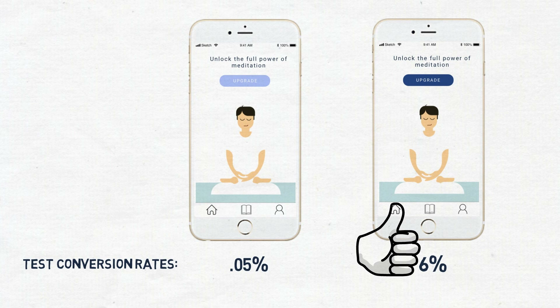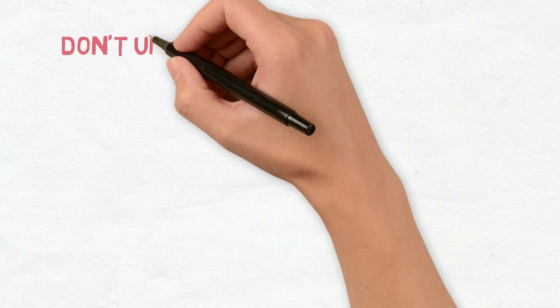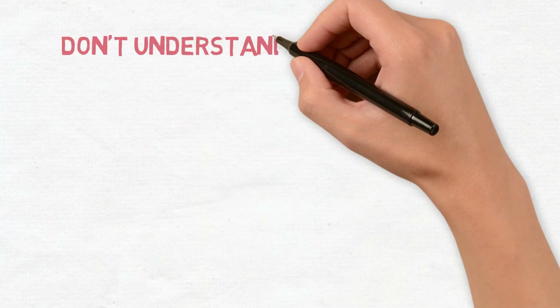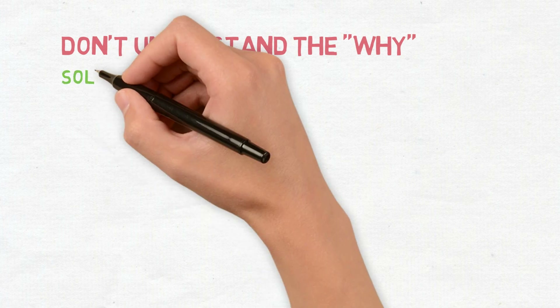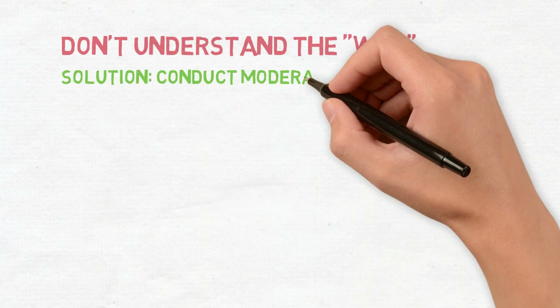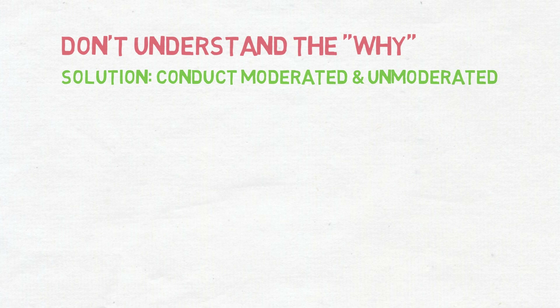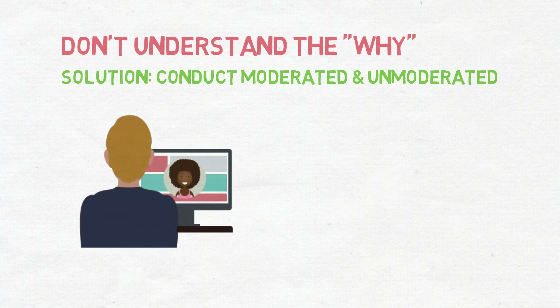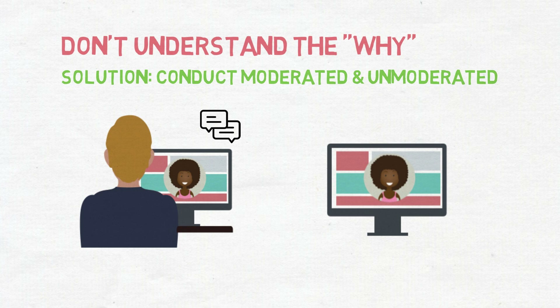The downside to A-B testing is that you won't understand why customers prefer one version over the other. In order to understand the why, you should perform moderated or unmoderated sessions to supplement your A-B tests. This way, you can uncover your customers' thoughts and feelings towards the designs, which is powerful because you'll understand the context of your customers' preference.